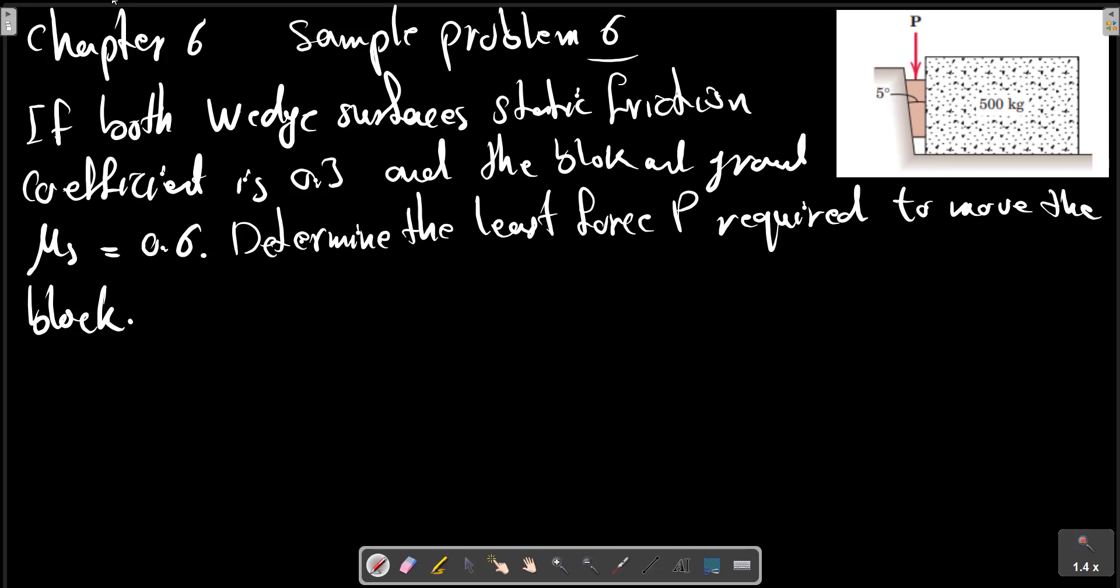Chapter 6 Sample Problem 6: If both wedge surfaces have static friction coefficient 0.3 between the block and wedge, and mu_s equals 0.6 between the block and ground, determine the least force P required to move the block.